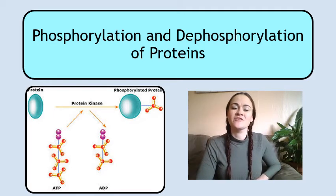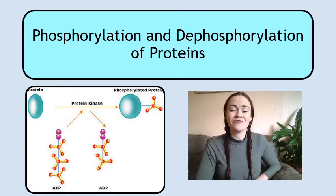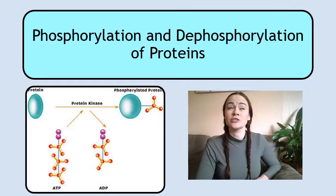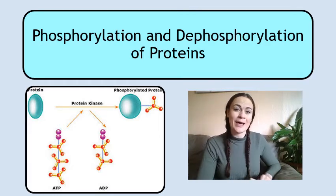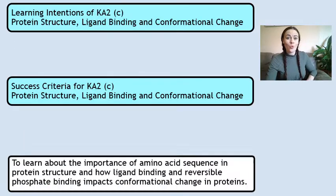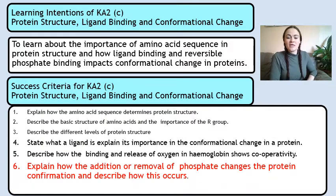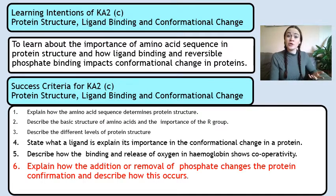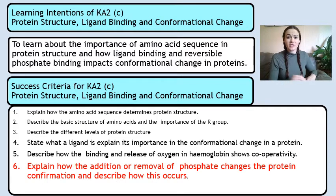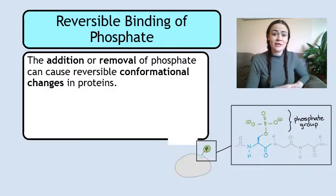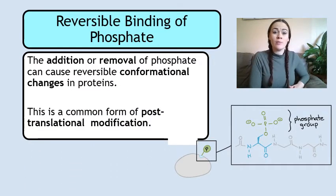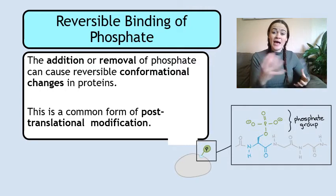This video is about phosphorylation and dephosphorylation of proteins, from the Advanced Higher Biology course. It covers part C of key area 2, specifically the last bit. We're going to explain how the addition or removal of phosphate can change the conformation of a protein. Phosphorylation is adding the phosphate; dephosphorylation is removing the phosphate. This is an example of post-translational modification.